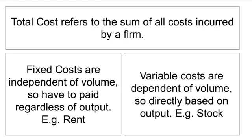Total costs refers to the sum of all costs incurred by a firm, including fixed costs and variable costs. Fixed costs are independent of volume — they have to be paid regardless of output. For example, if the company produces no products in its first month, the landlord still expects rent and the bank still expects the loan repayment. Those are examples of fixed costs.